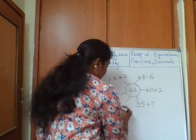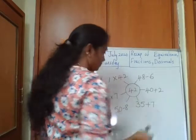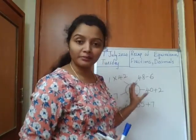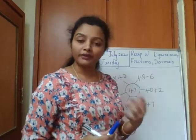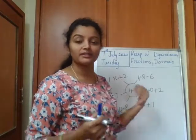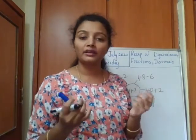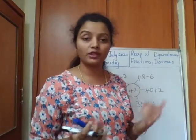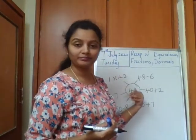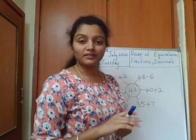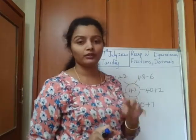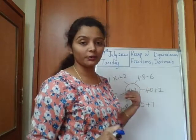Let's try one more with subtraction: 50 minus 8 equals 42. So, representing a number using different numbers and symbols and making it equal to the given number is balancing — that is equivalence. You are making the numbers equal. You will do four problems on equivalence.